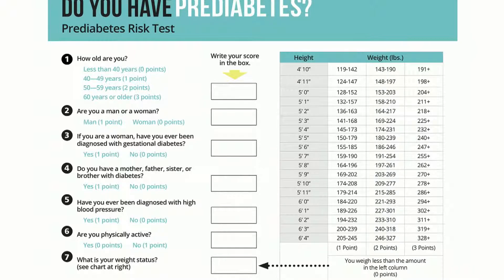Once you've tallied your points, a score of five or higher indicates you are at risk for prediabetes. Some risk factors are modifiable versus non-modifiable — we'll hone in on nutrition and exercise as things we can improve. Additional risk factors not on the quiz include smoking, as well as race and ethnicity: African-Americans, Hispanics, Pacific Islanders, Native Americans, and some Asian-Americans all have a higher incidence of diabetes.